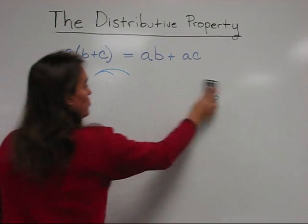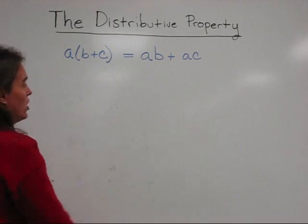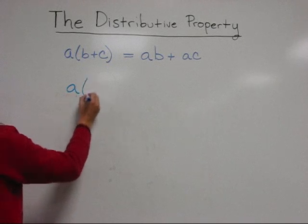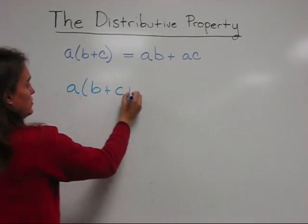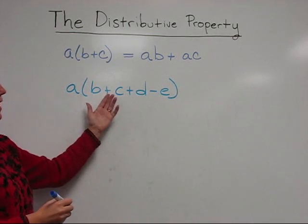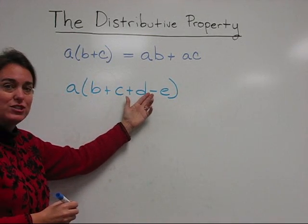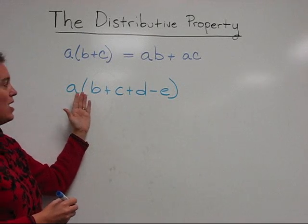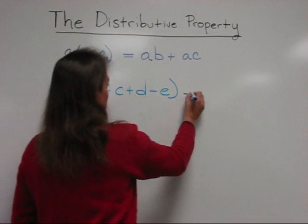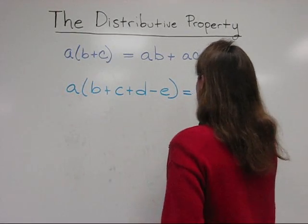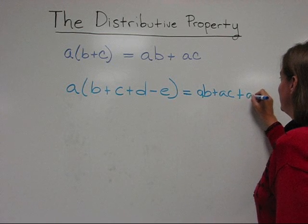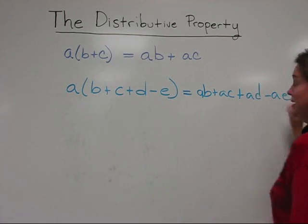The distributive property also works for longer expressions. Let's say we have a times b plus c plus d minus e. It can work for addition as well as subtraction inside the parentheses, and we can have as many or as few terms as we would like in here. So this would be equal to a b plus a c plus a d minus a e.